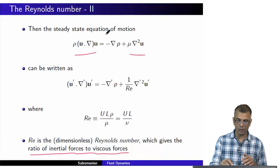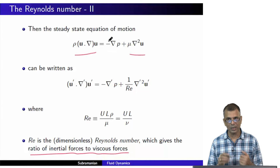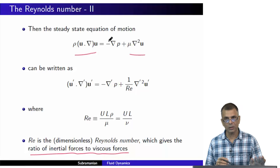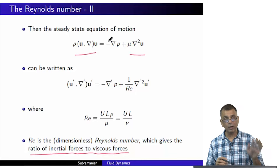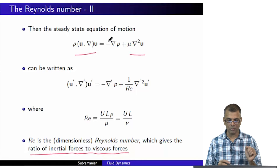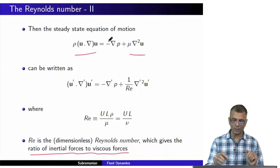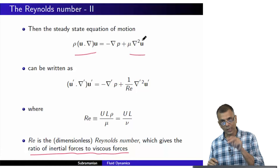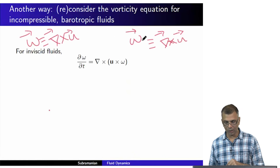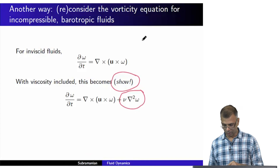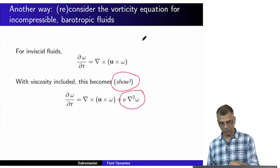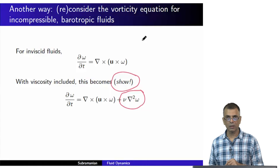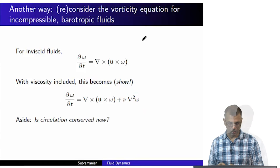If you just had the first two terms, this would be the steady-state Euler equation — an equation that applies to inviscid situations. But when viscosity is included, you have this term and the appearance of second derivatives. The same thing holds for the vorticity equation too: you have a vector Laplacian now acting on the vorticity, introducing second derivatives.